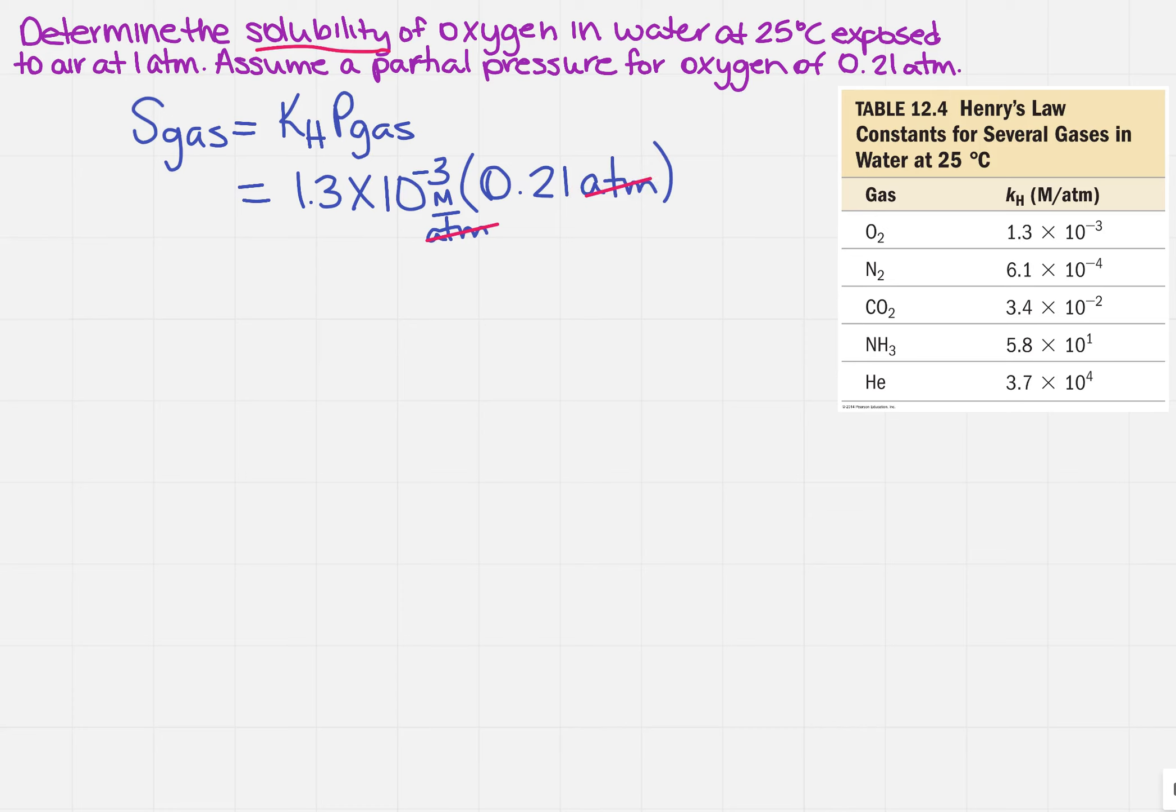So when I go in, I'm going to actually calculate this on my calculator. So when I did it, I got 0.000273, but I only want how many significant figures.